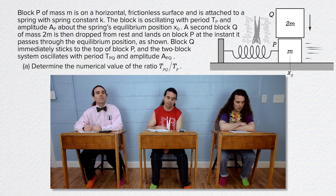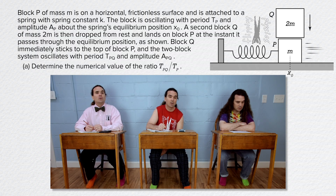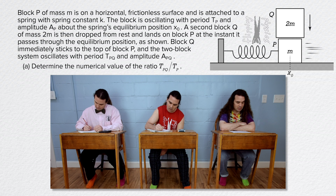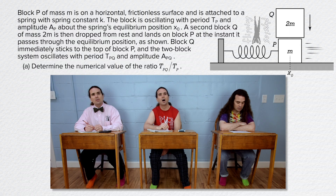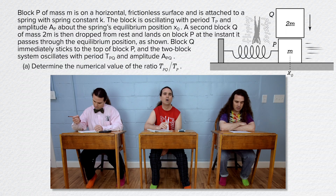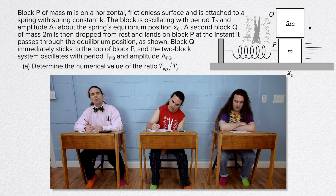Block P of mass m is on a horizontal frictionless surface and is attached to a spring with spring constant k. The block is oscillating with period T sub P and amplitude A sub P about the spring's equilibrium position x0. A second block Q of mass 2m is then dropped from rest and lands on block P at the instant it passes through the equilibrium position. Block Q immediately sticks to the top of block P and the two-block system oscillates with period T sub PQ and amplitude A sub PQ. Part A: Determine the numerical value of the ratio of the period of blocks PQ over the period of block P.